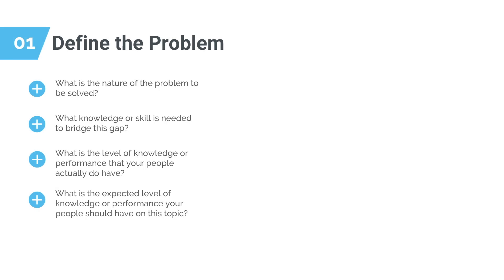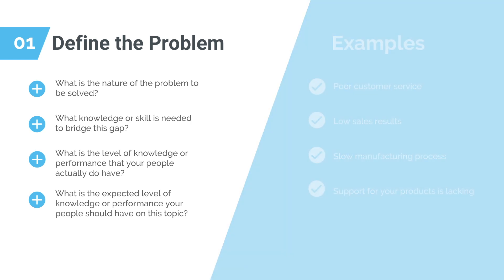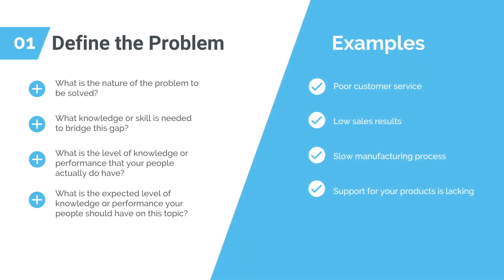Let's take a step-by-step look at how you can actually put this idea into practice. The first step is to define the problem. Ask yourself detailed and probing open-ended questions to find out what problem your training module is going to solve. The answers you'll get will help you clearly define the business problem and move on to setting up training objectives.